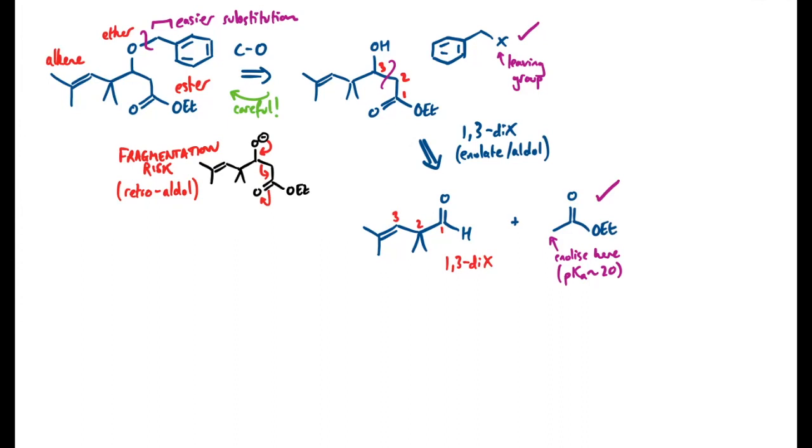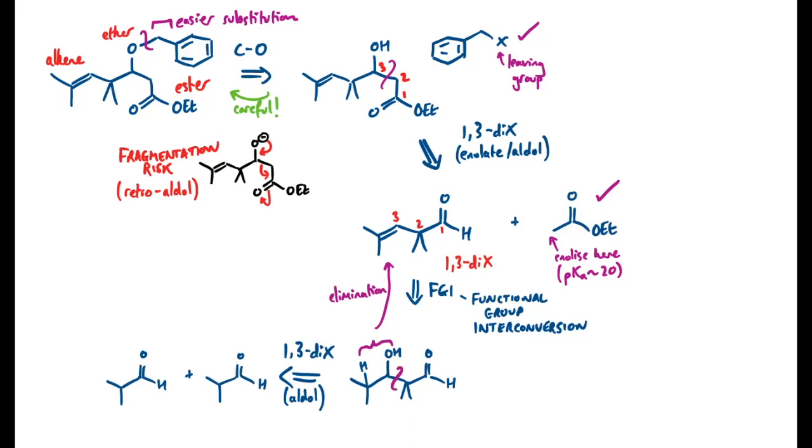So what I'm going to do is do a functional group interconversion to force my hand towards an aldol reaction, in the knowledge that I know there are reactions to form alkenes that involve dehydration, and I can do an elimination reaction to get rid of that water. And now I have the 1-3 hydroxyl group to the carbonyl, I can do the aldol disconnection again, and that takes me back to two identical molecules.